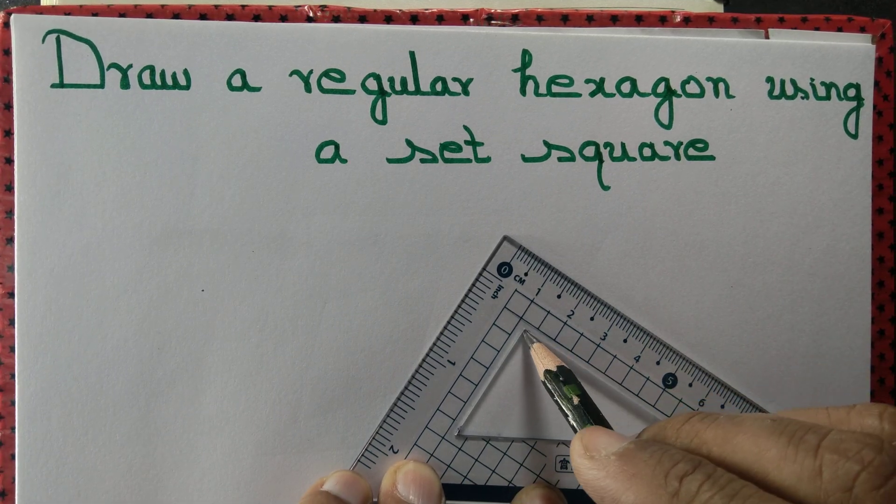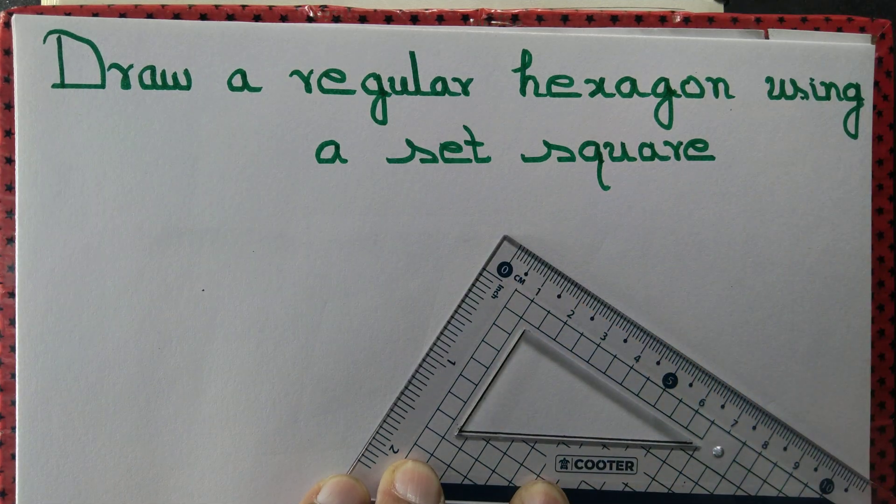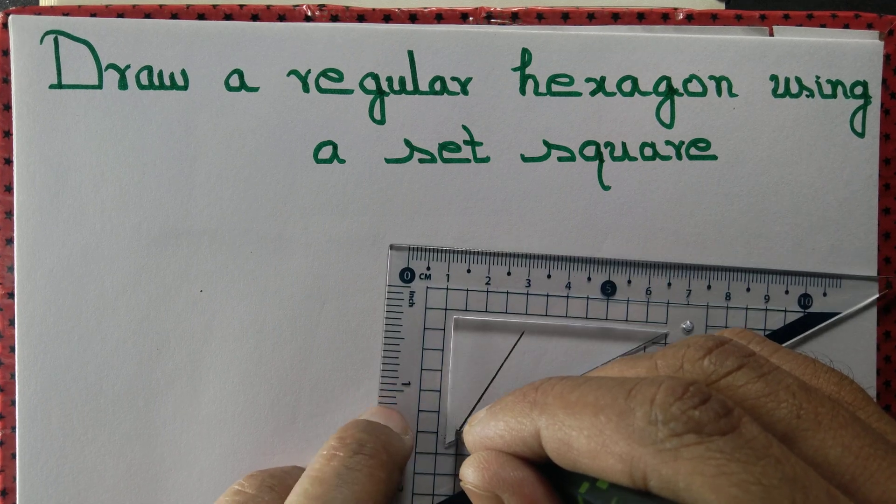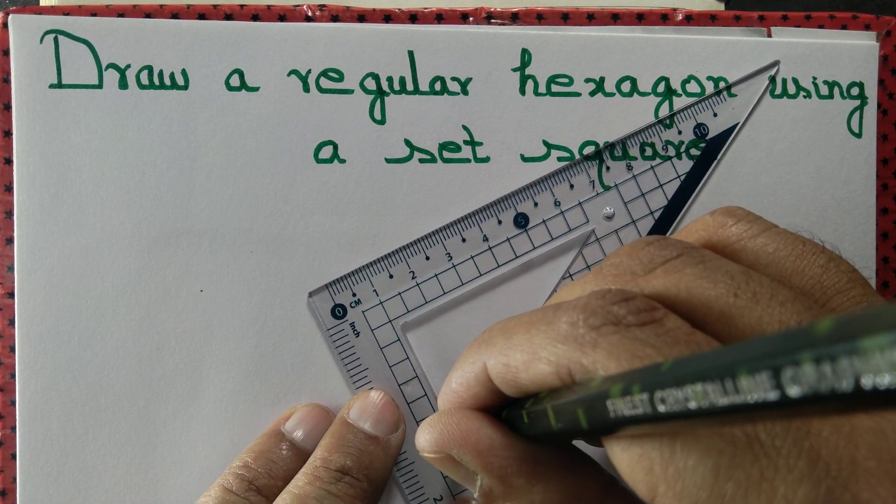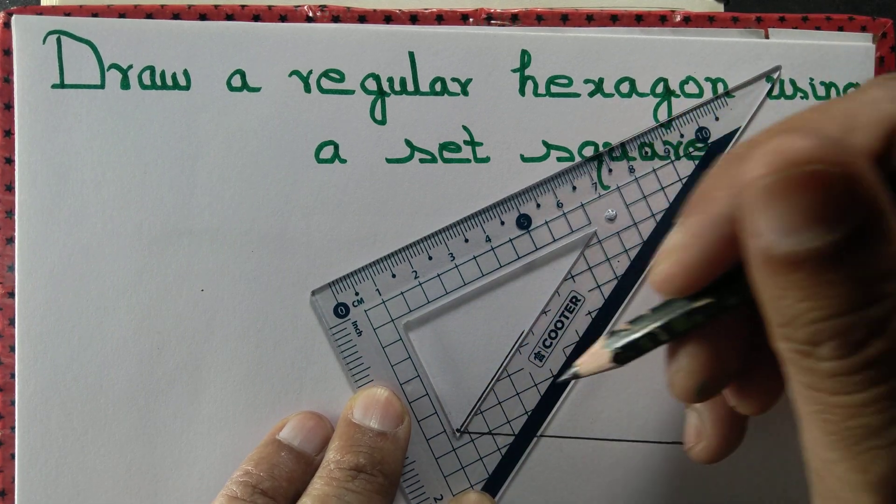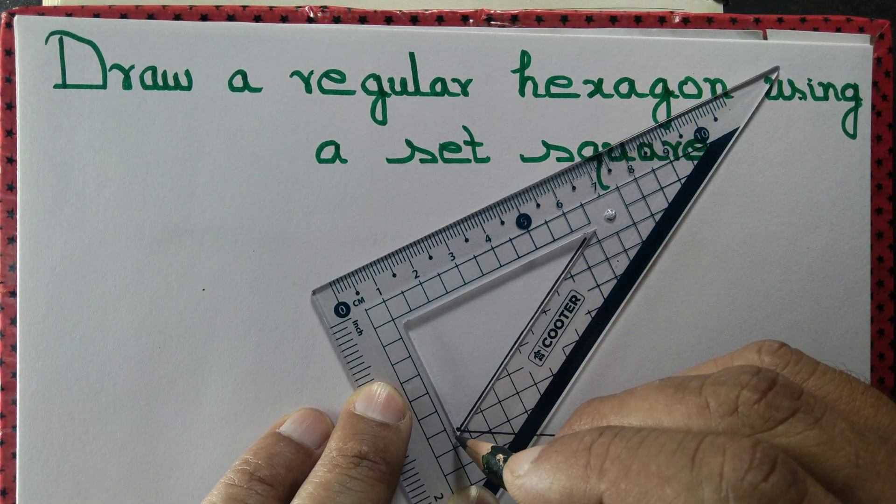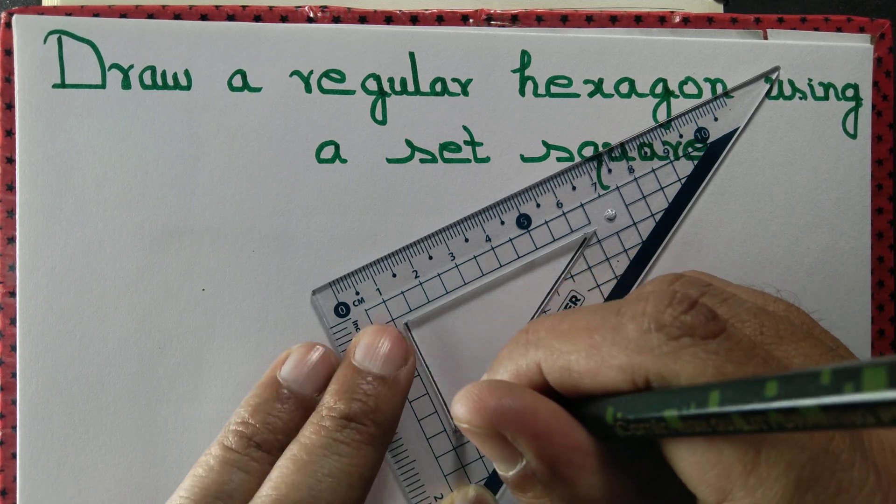So let us draw that angle. We draw one angle that measures 60 degrees. Let us draw another angle that measures 60 degrees. So we draw two angles that measure 60 degrees.